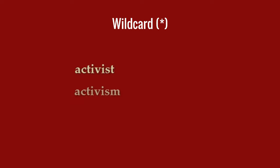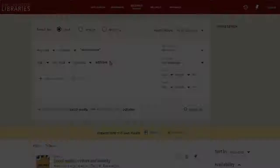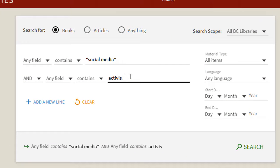Sometimes it's a good idea to allow for multiple forms of a word. In this example, you will probably be interested in seeing results for the words activist and activism. The easiest way to do this is to use the wildcard, which in most search tools is an asterisk. Using wildcards will expand your search results.